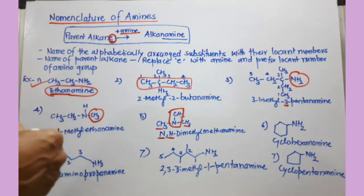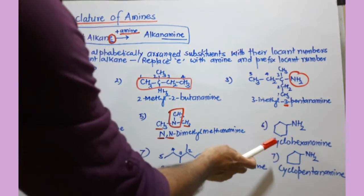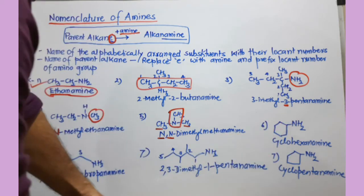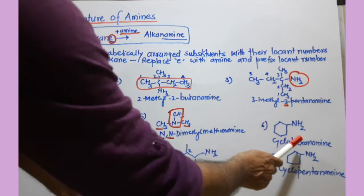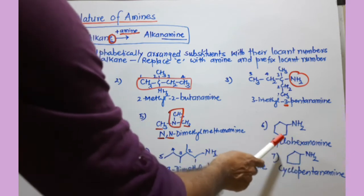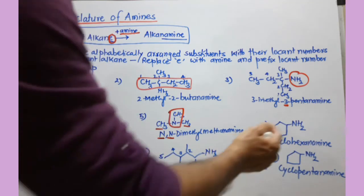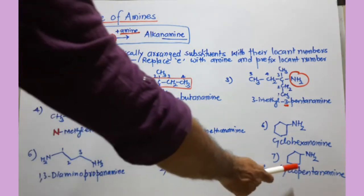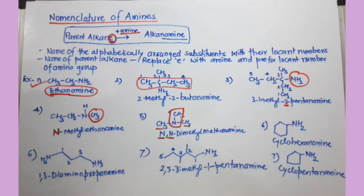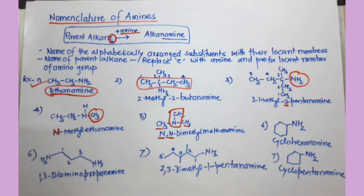If a cycloalkane is present, you find out which cycloalkane it is. This one is cyclohexane, so I replace the 'e' of cyclohexane with 'amine' — that becomes cyclohexanamine. In the other example, this is a cyclopentane, so it becomes cyclopentanamine.